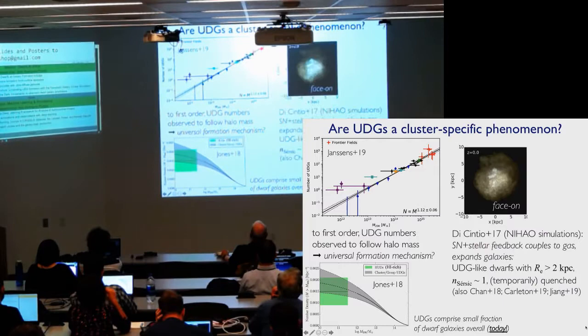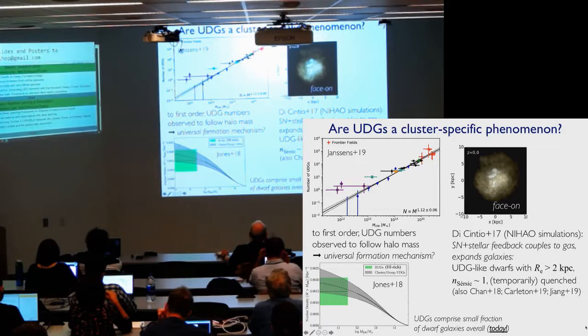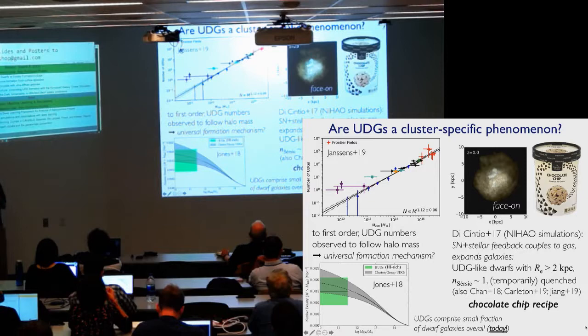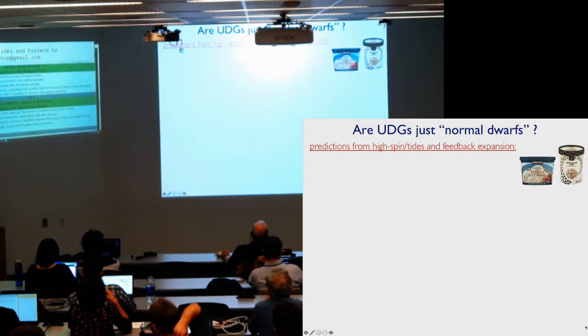So as we already heard about, the NIHAO simulations is one way to have a universal formation mechanism that works in all environments through this internal feedback mechanism. You can get something that is temporarily quenched in between, or looks quiescent in between feedback episodes. And I'll call this the chocolate chip recipe. It's a little different from just the vanilla recipe. This extra twist, extra ingredient of the internal feedback.